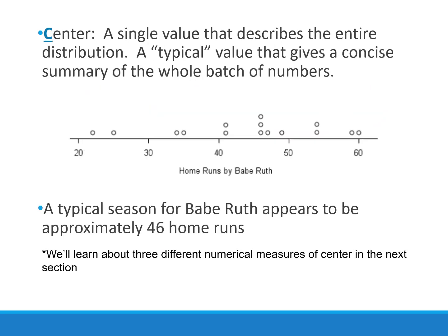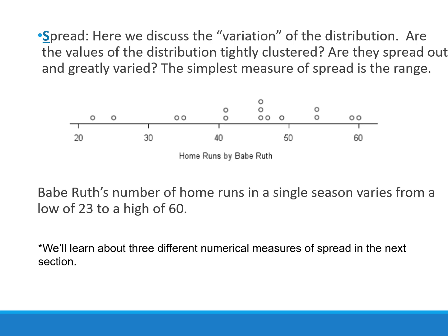The C in SOCS is center — a typical value, one number that represents the full data set. The last S is spread, where we discuss the variation of the distribution: how spread out is the data, is it clustered tightly together or greatly varied? The simplest measure of spread is the range, though it's actually not an appropriate measure and we'll replace it as we learn new ones. Babe Ruth's number of home runs in a single season varies from a low of 23 to a high of 60.